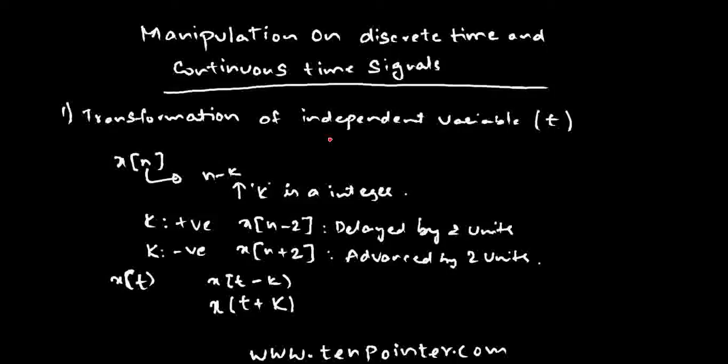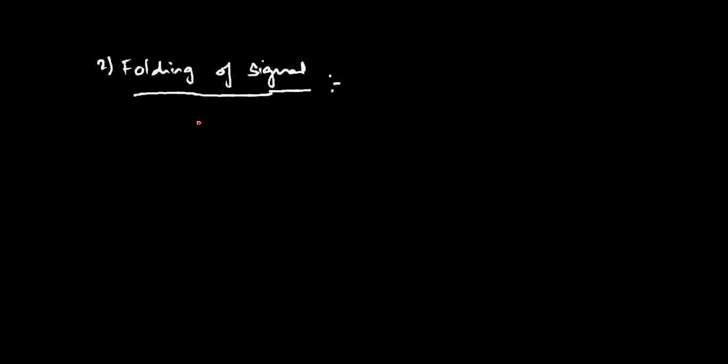Let us look at the next method — the second technique, which deals with folding of a signal. These techniques are very commonly used in communication theory and are important from an examination point of view. In the exam, you may be given x of n and asked to plot x of n minus 2, x of t minus 2, x of n plus 2, or x of t plus 2, or use delayed or advanced versions for some other purpose. Now let us see what folding of a signal means.